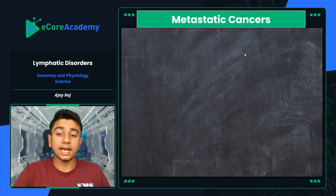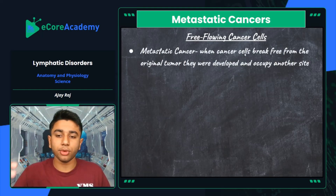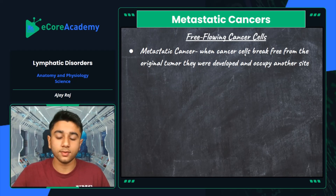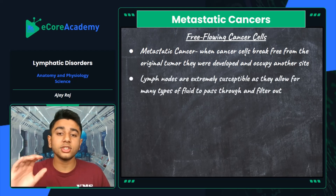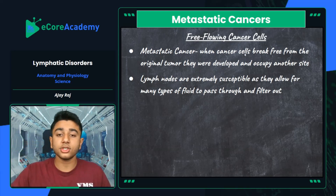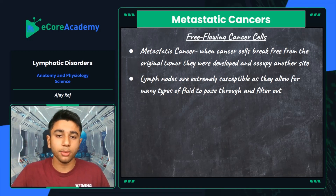Metastatic cancers involve free-flowing cancer cells — a more extreme disorder. Metastatic cancer occurs when cancer cells break free from the original malignant tumor and develop in other parts of the body. Lymph nodes are extremely susceptible to these free-flowing cancer cells because they allow many types of fluids to pass through and be filtered. These small organs filter fluid — whether blood or lymph — passing through them.